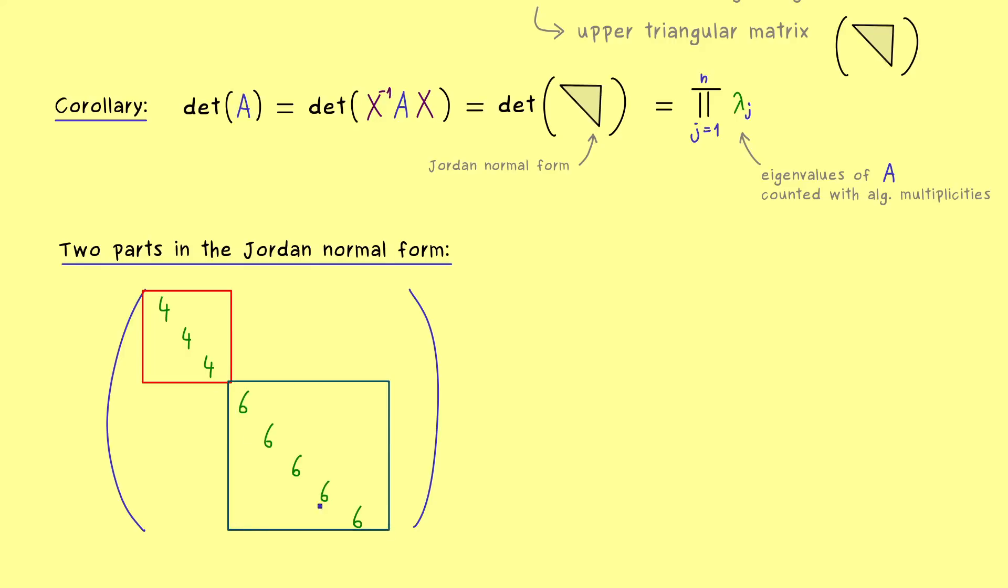And inside a given Jordan block, we find the so called Jordan boxes. And for seeing the Jordan boxes, it depends where we find the ones above the diagonal. So in this case here, we have two Jordan boxes in each Jordan block. And now the important part is, that we can distinguish the diagonal and the nilpotent part in each of the boxes.